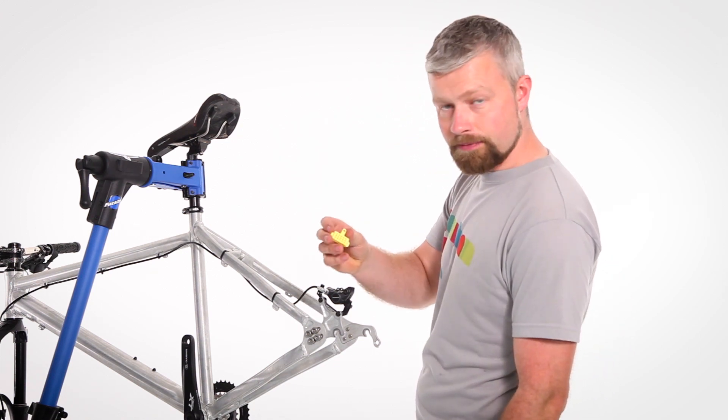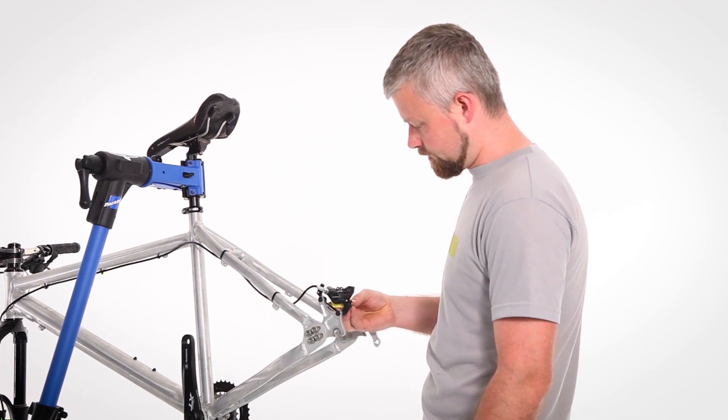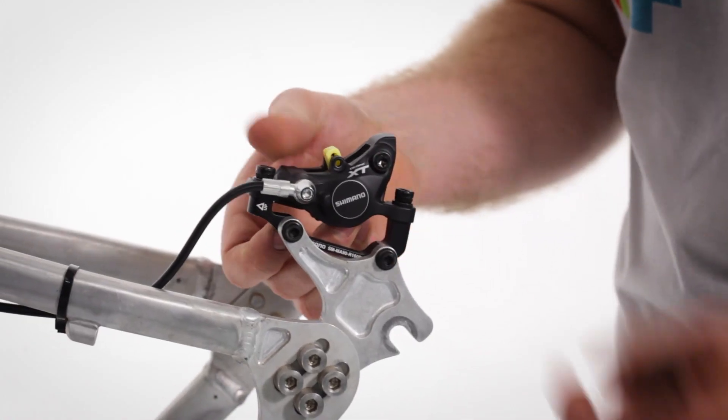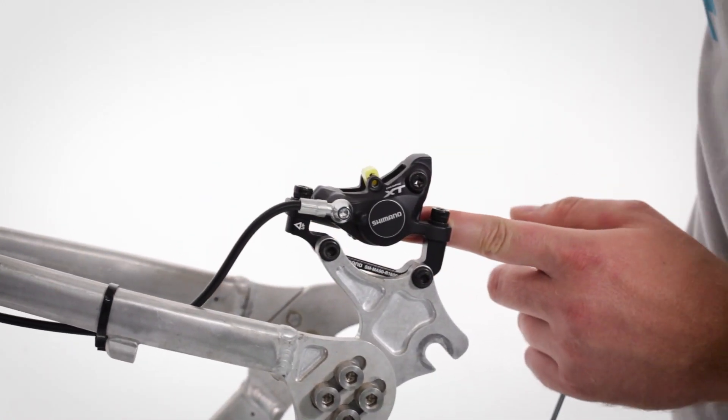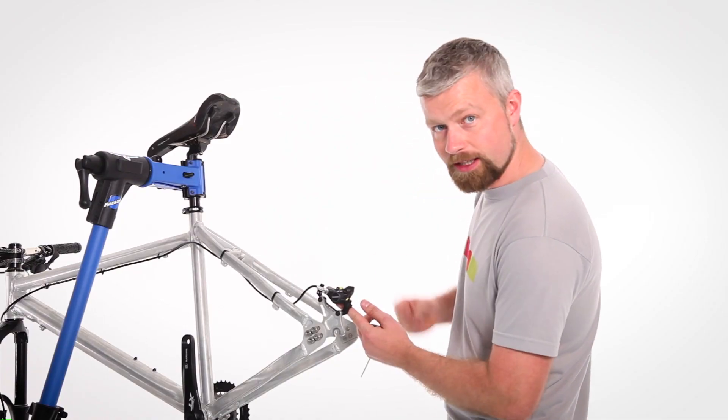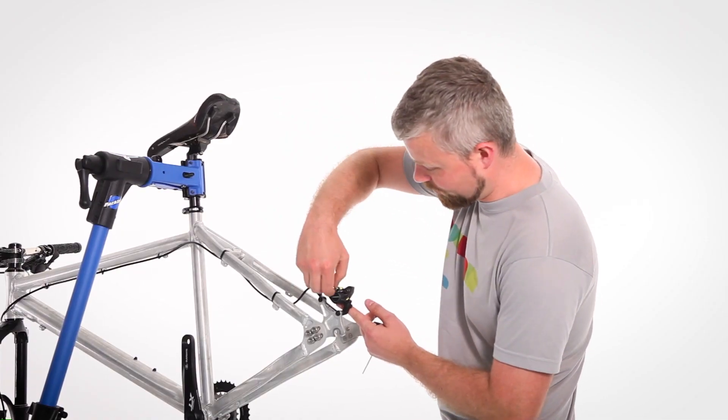Then we need to fit our bleed block, which slips into place like so. With it in place, get your pad pin, pop it through.